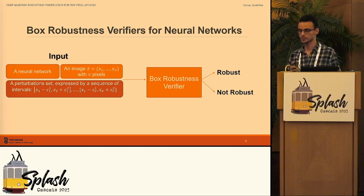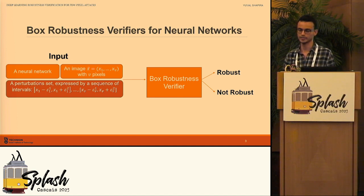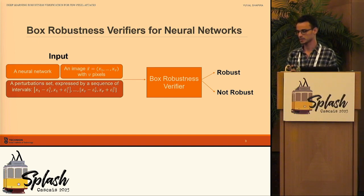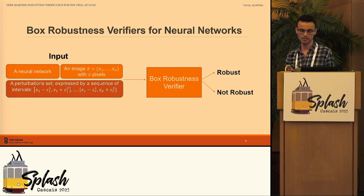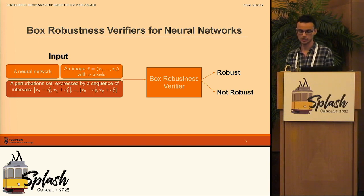To address these concerns, various studies have shown methods to formally prove robustness of neural networks, focusing on a property called local robustness. This property means that no adversarial example could be found in a given neighborhood of an image. They typically work with box neighborhoods, so we call them box robustness verifiers. Their input is a neural network, an image, and a box neighborhood containing it, expressed by a sequence of intervals, one for each pixel. The output is whether the network is robust to adversarial examples in this neighborhood or not. We know that these verifiers are suitable for proving robustness against attack models that change each pixel independently.